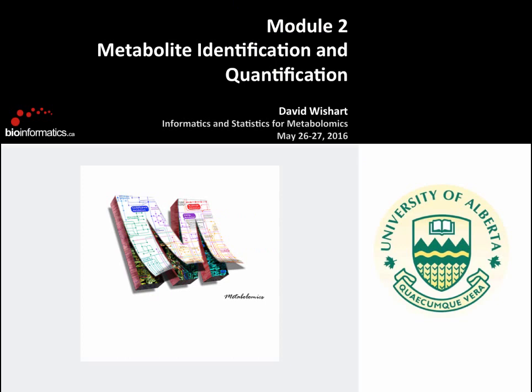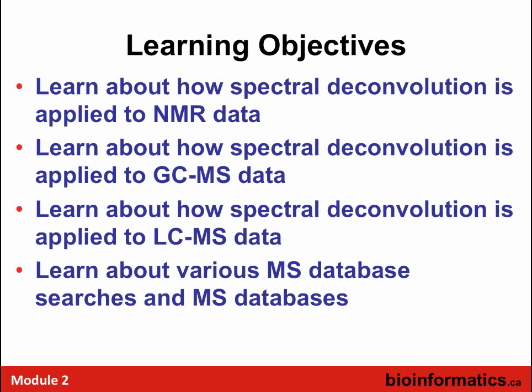We're going to be talking about aspects of metabolite identification and quantification — this idea of going from spectra to lists. We're going to talk about spectral deconvolution, looking at NMR, GC-MS, and LC-MS. This is a lead-up to the lab you're going to be doing this afternoon.